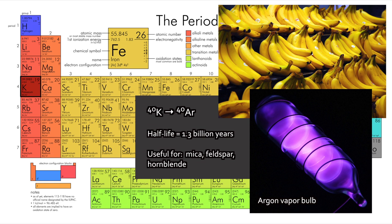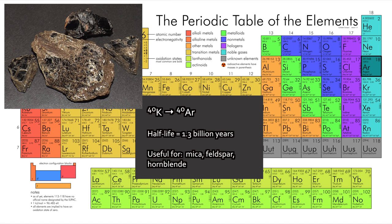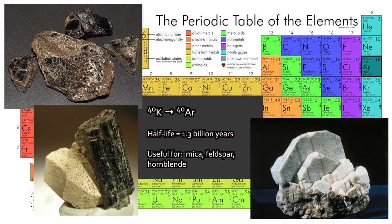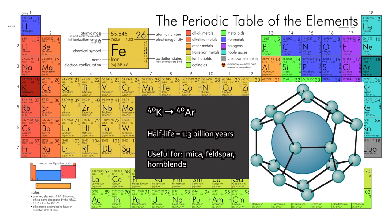Potassium-40 will naturally decay to argon-40 with a half-life of about 1.3 billion years. This technique is useful for old and fairly young materials. Certain minerals are better for this than others — mica, feldspars, and hornblende are really nice minerals that this works for. It has to be more specific in this case because potassium-40 is decaying to a gas: argon-40. A lot of mineral lattices simply won't trap the argon very well and it'll drift away. Other minerals have a lattice cage where the potassium resides, preventing the argon from escaping once it transmutes.